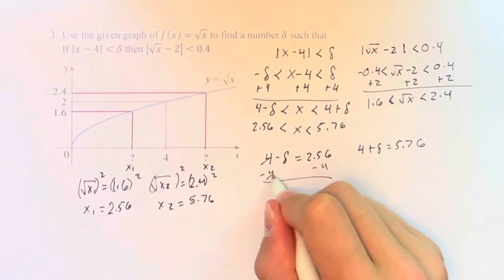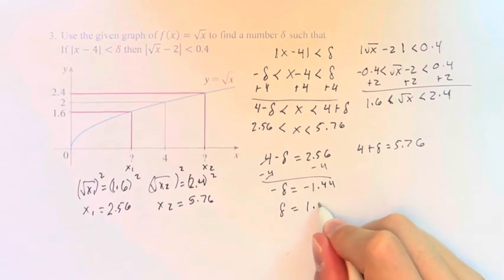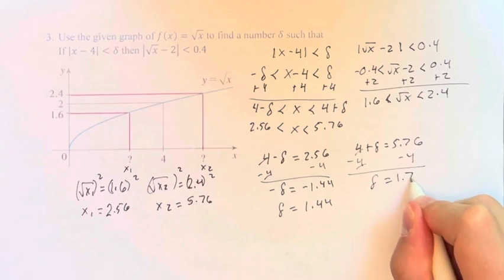So doing this, we get negative delta is equal to negative 1.44. So delta equals 1.44. And subtracting 4, we get that delta equals 1.76.